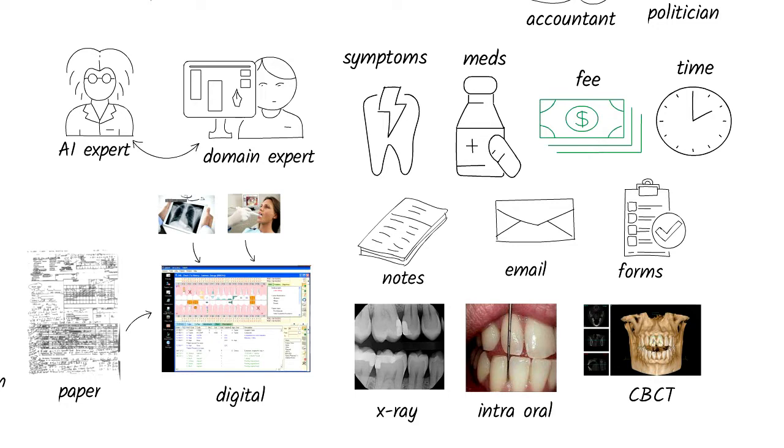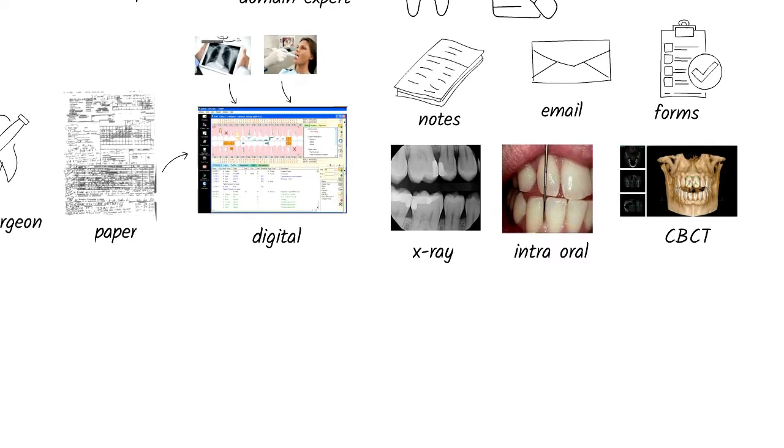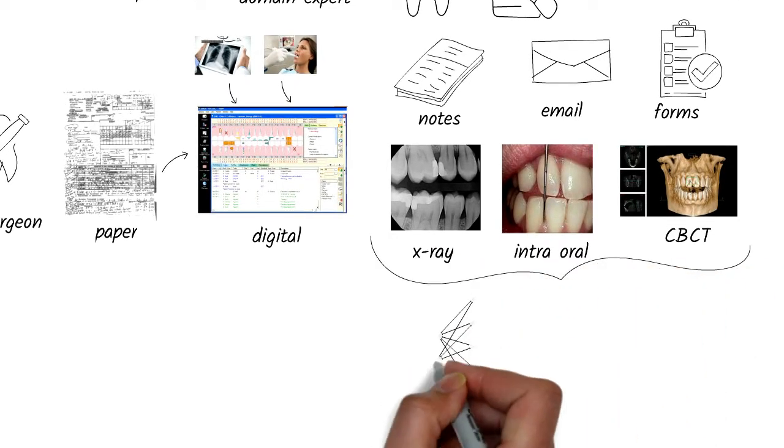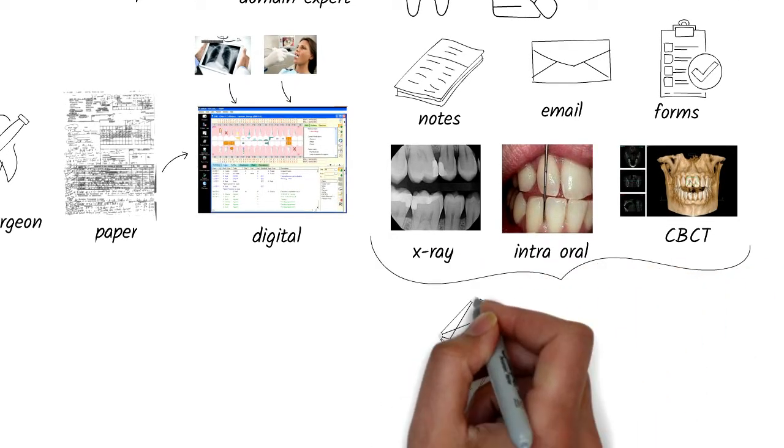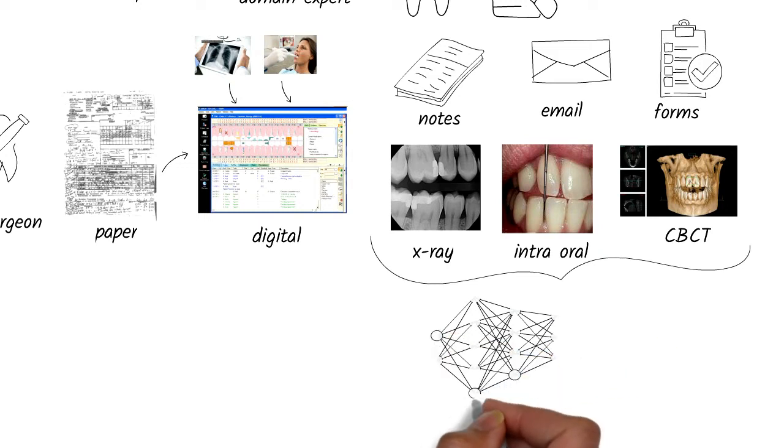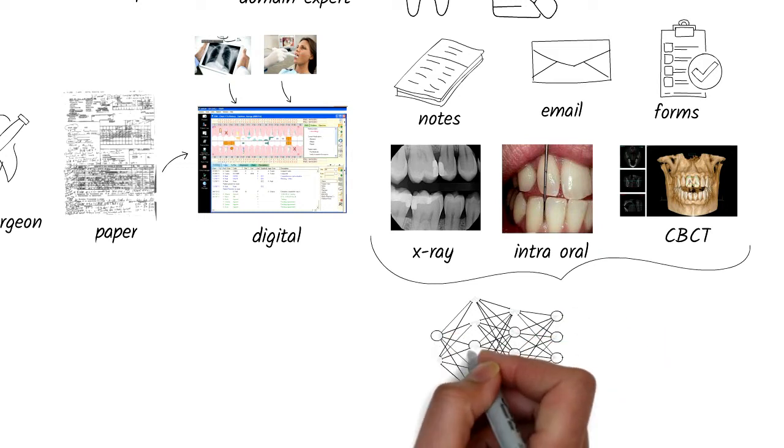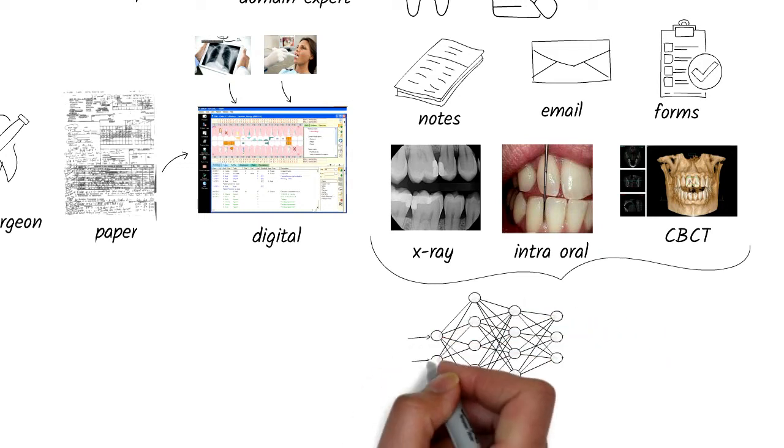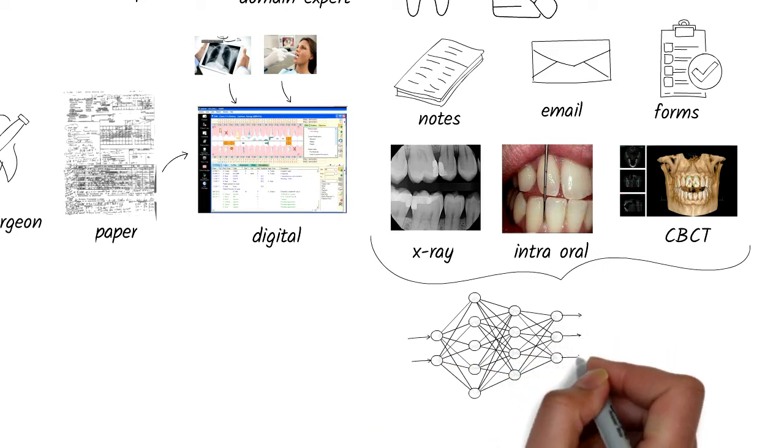The question is, how can we use all this data? Images are one primary way that endodontists diagnose tooth problem. This means that we can try to use computer vision for diagnosis. As if to support my hypothesis, I found a few research papers on endodontics that is exploring the use of CNN, or convolution neural networks, for diagnosis.